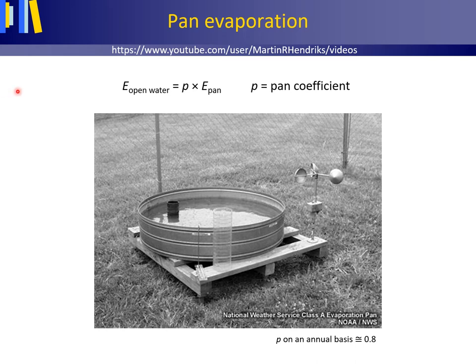Thus, to obtain open water evaporation rates from pan evaporation data, the pan evaporation values need to be multiplied by a pan coefficient p — a fractional value larger than 0 and smaller than 1 — that depends on the type of pan used and the time of use, that is, the season.